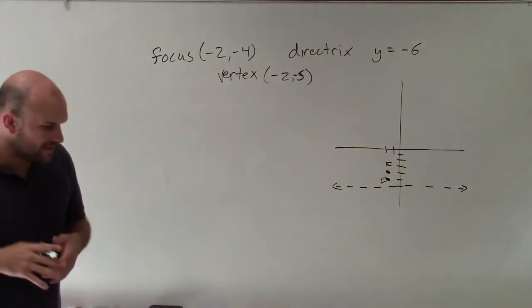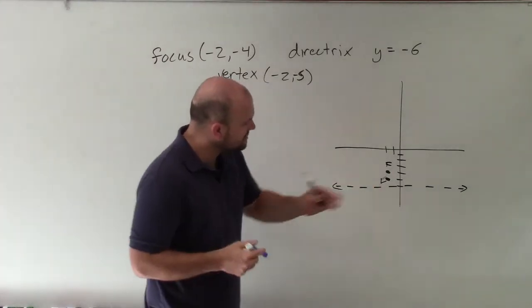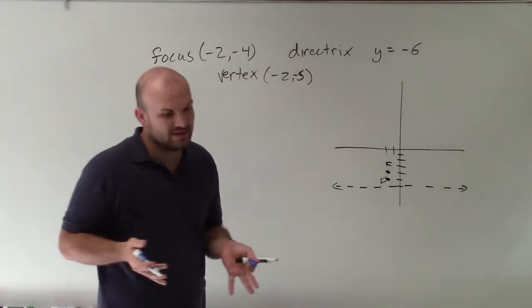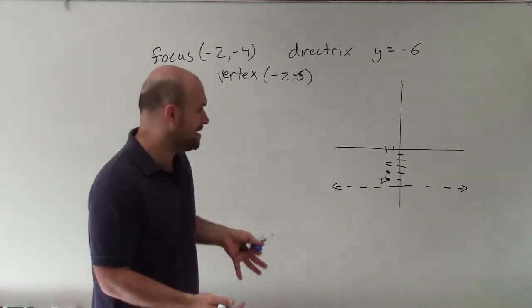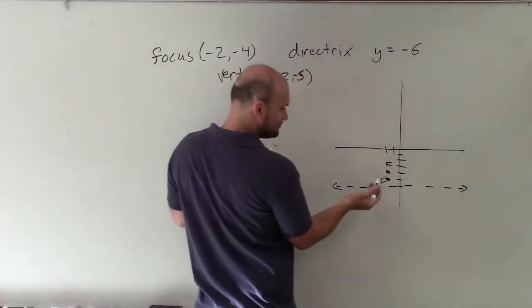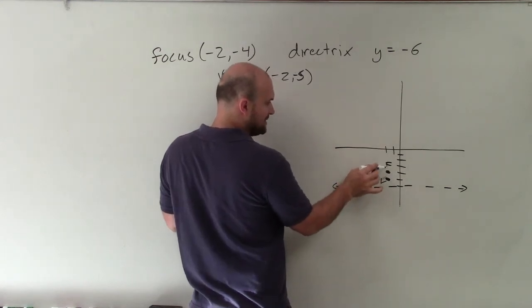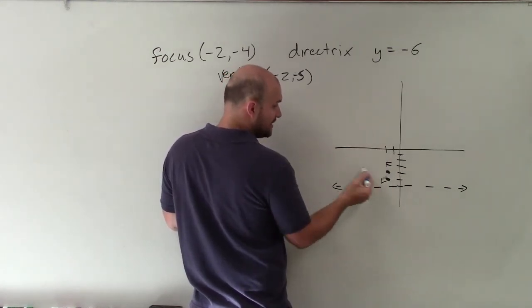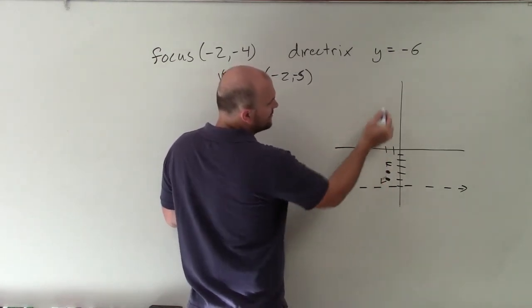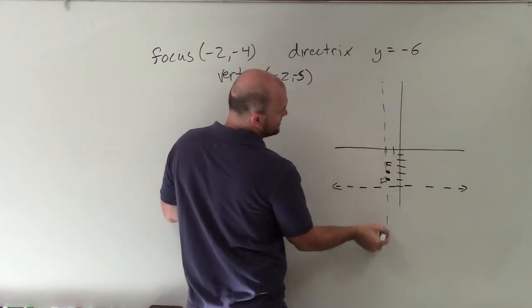OK, now the next thing is we understand that the vertex and our focus are always going to be on the same axis of symmetry. Remember the vertex is in between the focus and the directrix, because it's the midpoint between there. But also remember the focus and the vertex are on your axis of symmetry.